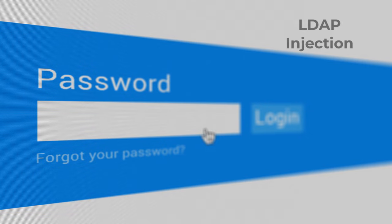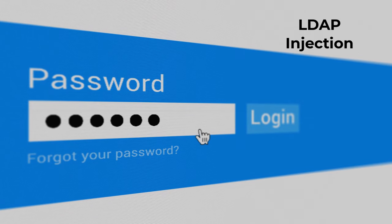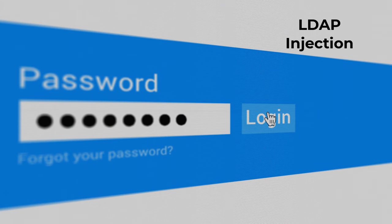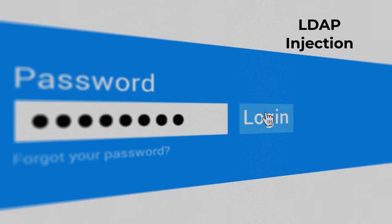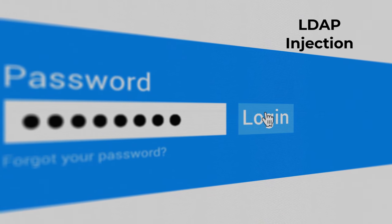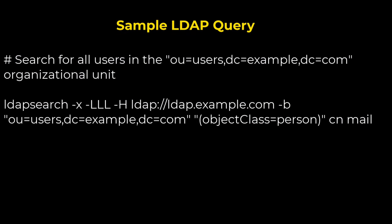LDAP injection is a type of security vulnerability that occurs when an attacker can manipulate Lightweight Directory Access Protocol (LDAP) queries by injecting malicious input, leading to unauthorized access, data exfiltration, and other security breaches. LDAP injection exploits how LDAP queries are constructed, allowing attackers to alter the intended query logic and retrieve or manipulate sensitive information stored in directory services.